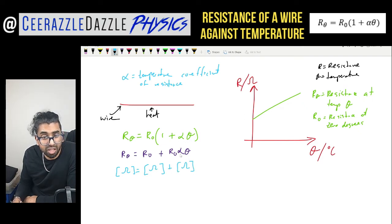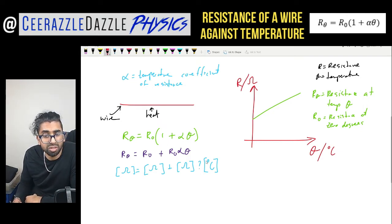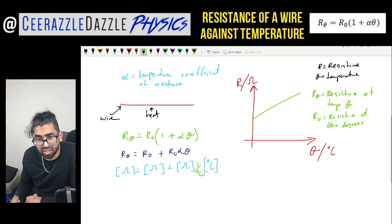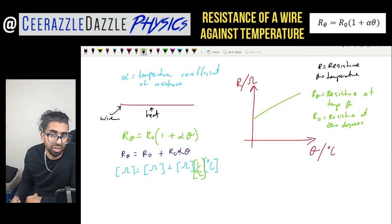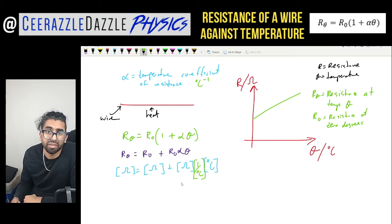On the left side we have ohms, so both terms on the right must also be ohms. To cancel the degrees Celsius, α must have units of per degree Celsius — that is, °C⁻¹. So alpha is measured in degrees Celsius to the minus one. Bringing that up, the equation balances: ohms equals ohms equals ohms on either side. Those are the units for the temperature coefficient of resistance.